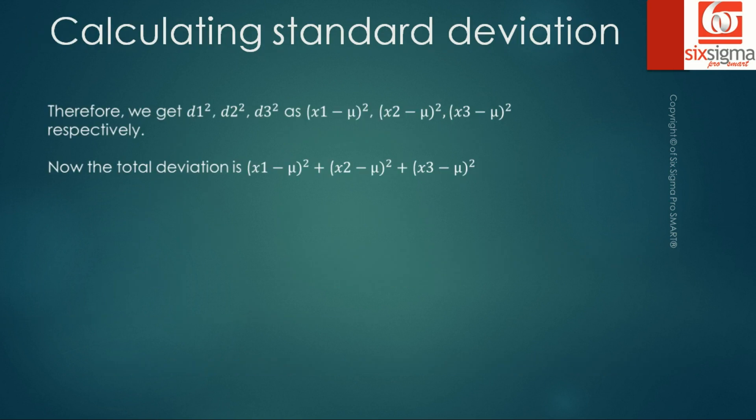Now we get d1 squared, d2 squared, and d3 squared as (x1 minus mu) squared, (x2 minus mu) squared, and (x3 minus mu) squared respectively. Now the total deviation, or rather the squared deviation, is obtained by adding all these up. If you were to look at the average deviation, we divide by the number of data points. Simple average.